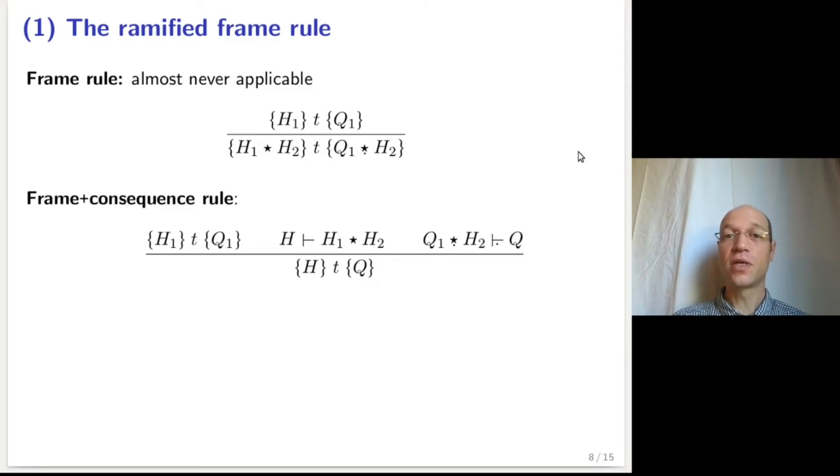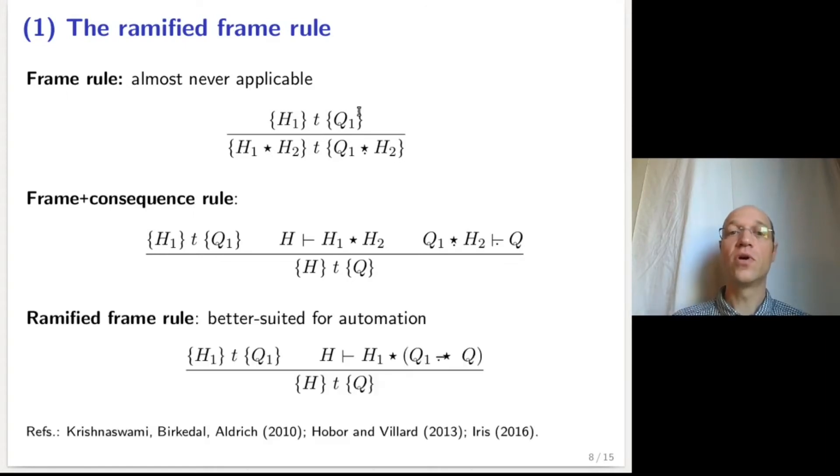h2 can be computed as a difference between h and h1. Computing this difference can be well-automated in a simple case, but if h contains existentially quantified variables, it can be quite tricky to figure out whether these corresponding variables should get quantified in h1 or in h2.